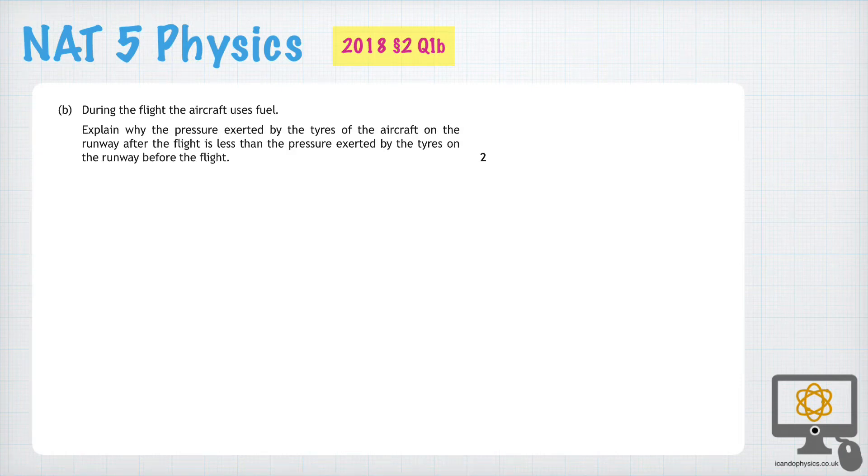In solving this problem, which is question 1B from the 2018 National 5 Physics paper, what you have to think about is the formula P is equal to F over A.